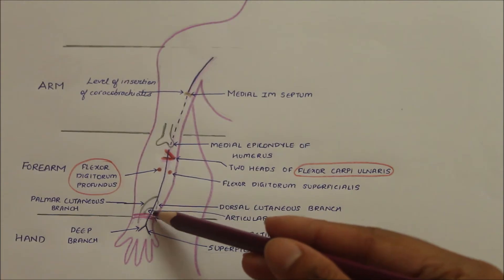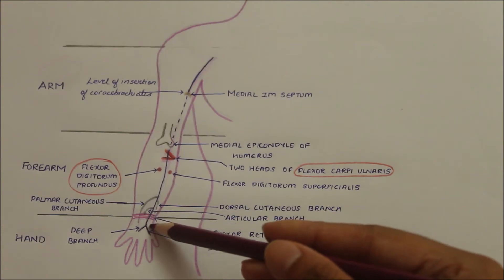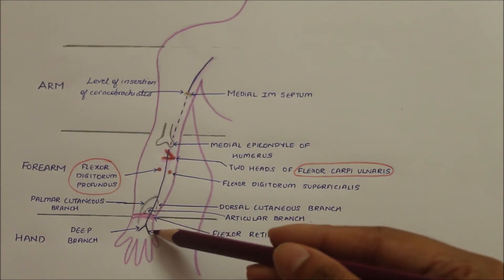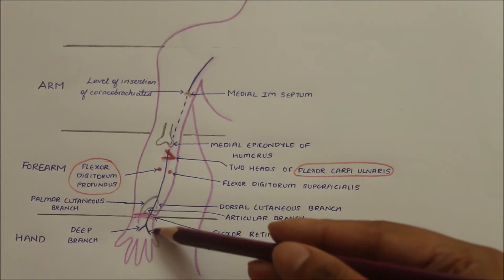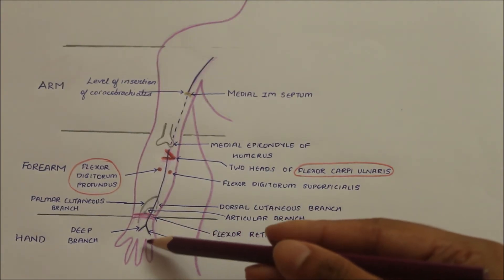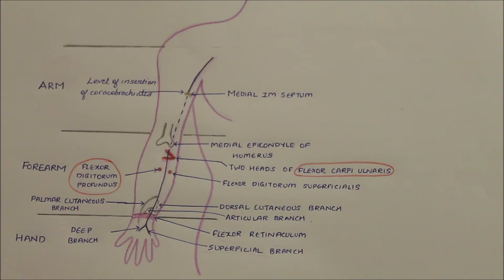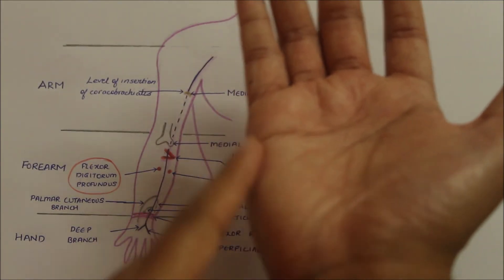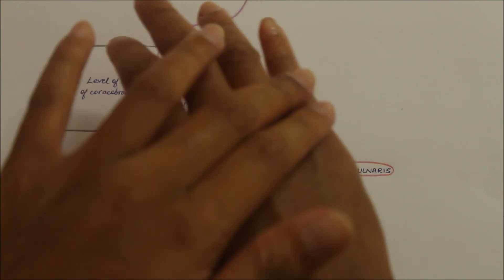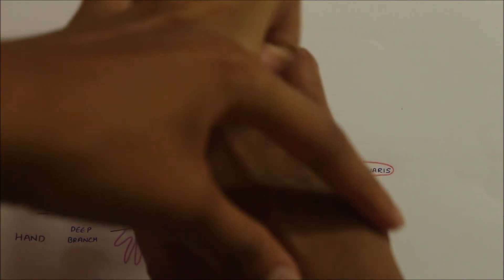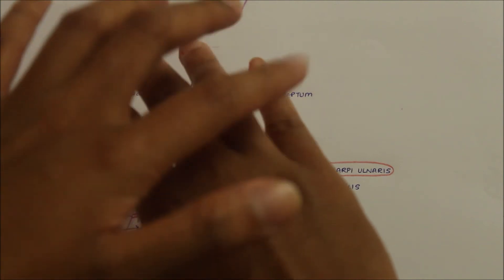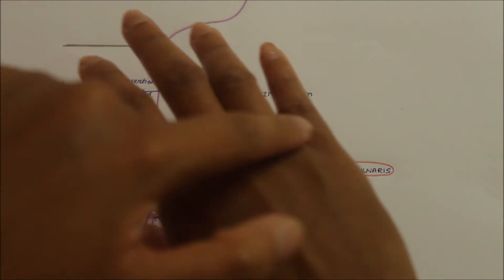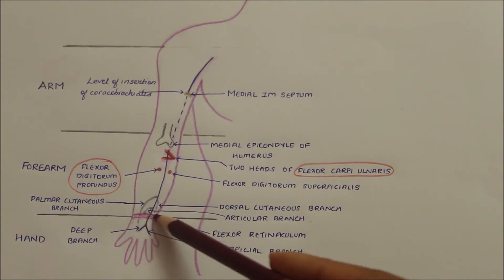The ulnar nerve also provides a dorsal cutaneous branch, which winds around the medial border of the hand and reaches the dorsum — that is the back of the hand. Here it supplies the medial half of the skin of the dorsum of the hand, and the same branch extends into the proximal part of the medial two and a half fingers. Additionally, it provides an articular branch that supplies the wrist joint.